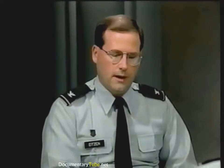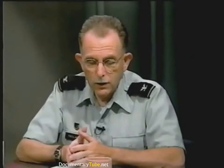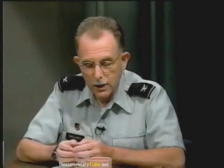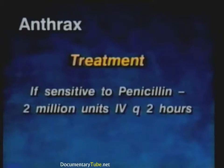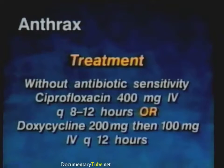Based on non-human primate models and in vitro sensitivities, for a penicillin-sensitive organism we recommend high-dose penicillin — 20 to 24 million units per day. If the organism is penicillin-resistant or sensitivities are unknown, we would recommend a fluoroquinolone or tetracycline given intravenously to manage this disease.